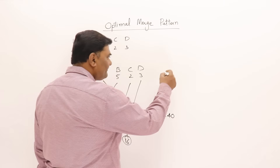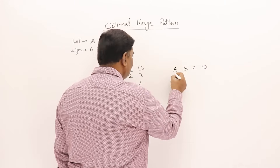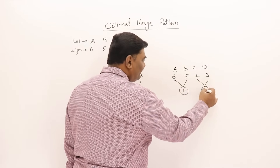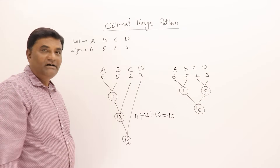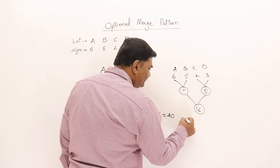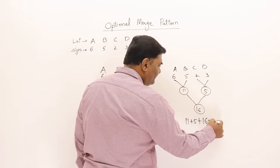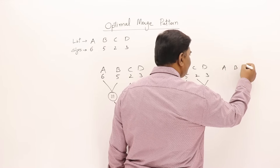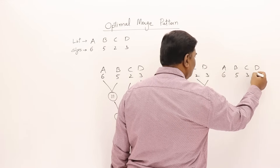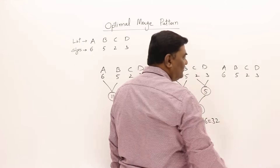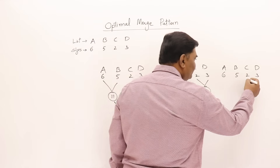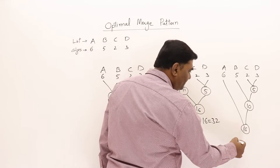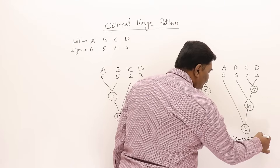Let us try a different arrangement — A, B, C, D with sizes 6, 5, 2, 3. I'll merge A and B to get 11, then C and D to get 5, then merge those two to get 16. Total cost is 11 plus 5 plus 16, which is 32. Let me try yet another way: merging C and D first gives 5, then B and C-D gives 10, then merging everything gives 16. Total cost is 5 plus 10 plus 16, which equals 31.